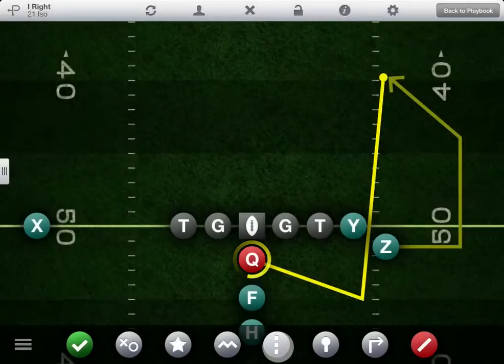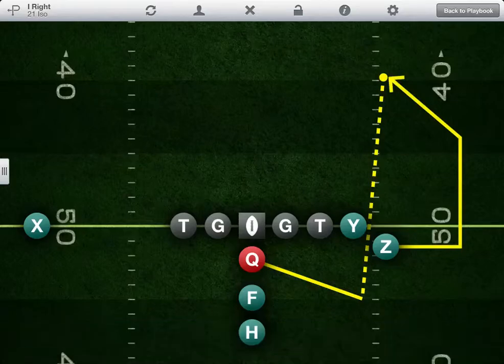You can make the last segment dotted to indicate a pitch or pass. Repeat this process for all players.